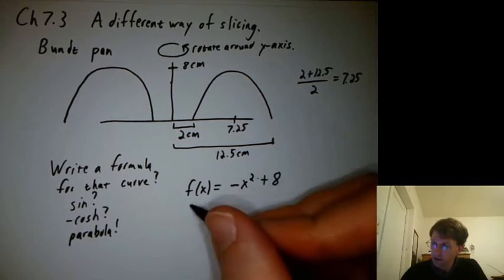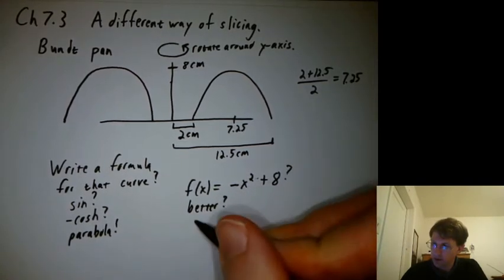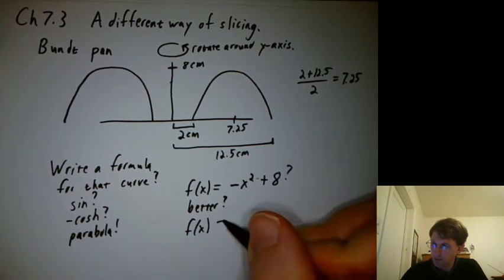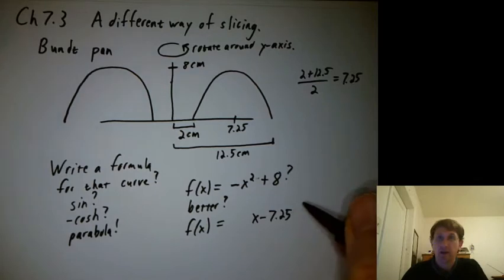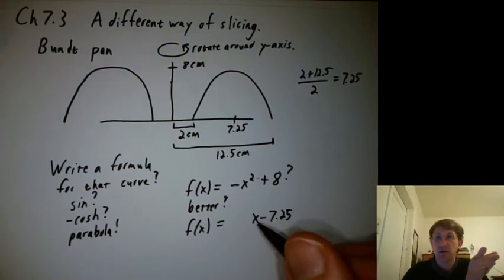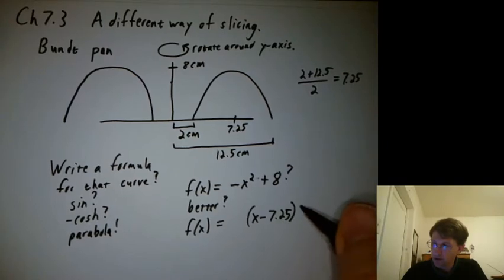So how can I get it centered? Well, I could say x minus 7.25. That way, what was 7.25 now acts like 0 because you're subtracting 7.25 from it. So I could try squaring that and adding 8.